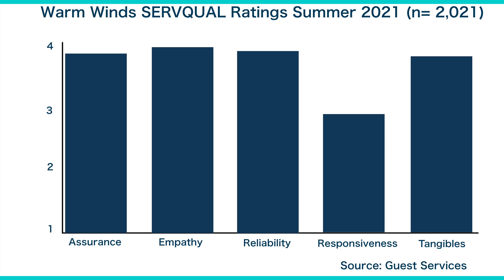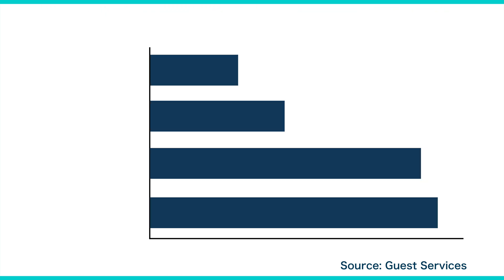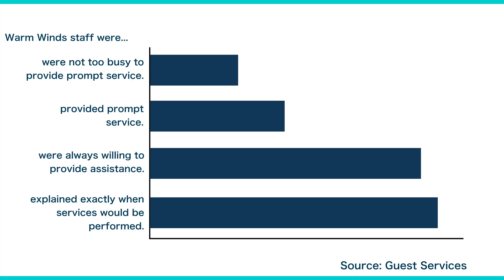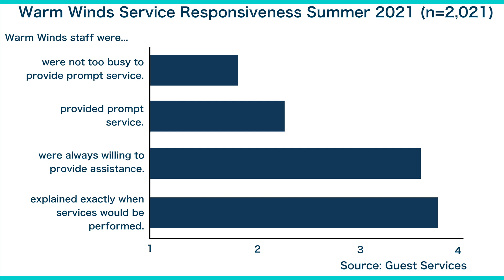Consistent with previous years, guests rated assurance, empathy, reliability, and tangibles extremely high. However, responsiveness did not meet expectations. Considering the lack of space on the x-axis, you decided to use a horizontal bar chart to examine the four items that focus upon the responsiveness of the Warm Winds staff. These items are now listed on the y-axis while the four-point Likert scale is moved to the x-axis. The updated title of the chart also reflects the more specific focus of the analysis.